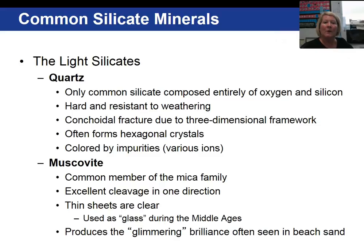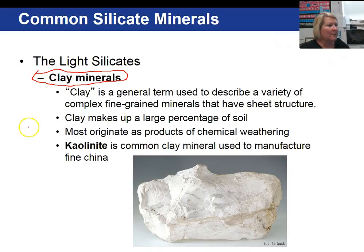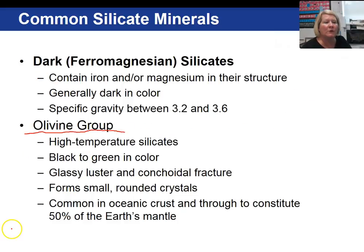Another non-ferromagnesium silicate is muscovite, a member of the mica family. It has one perfect direction of cleavage so that it peels off like pages in a book. Clay minerals are also classified as non-ferromagnesium, and clay makes up a large portion of our soil, produced primarily from chemical weathering processes. Kaolinite is a common clay mineral used to manufacture fine china.